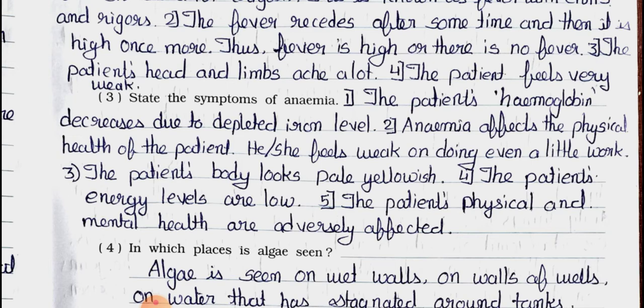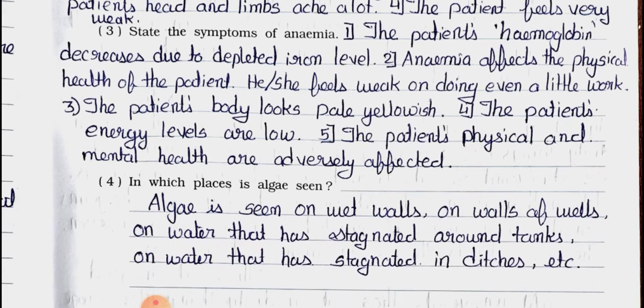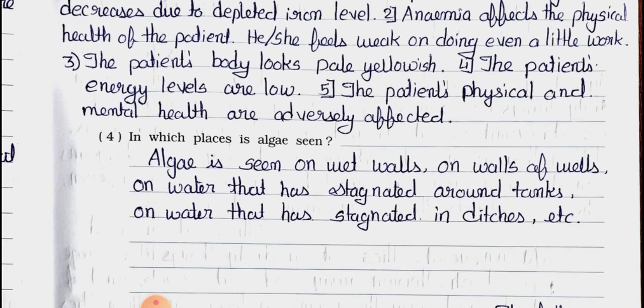Point 5: The patient's physical and mental health are adversely affected. Question 4: In which place is algae seen? Algae is green in color and seen in stagnant water. Answer: Algae is seen on wet walls, on walls of wells, on water that has stagnated around tanks, and on water that has stagnated in ditches.